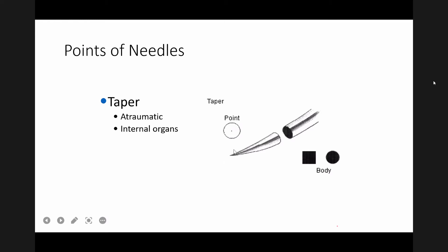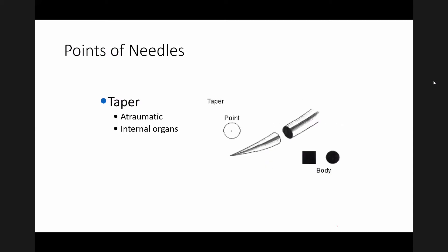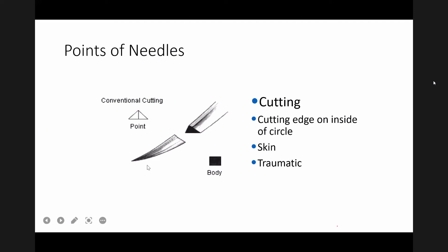The tip of the atraumatic needle is round and is used for internal organs. For tough structures like skin or tendons, a cutting needle is needed because skin is a very tough structure and it is difficult to pass a round-tipped needle through it. Cutting needles have a sharp pointed tip so they can pass through tough structures easily.